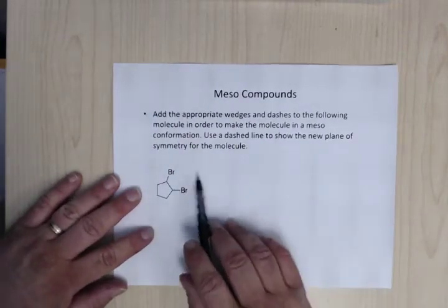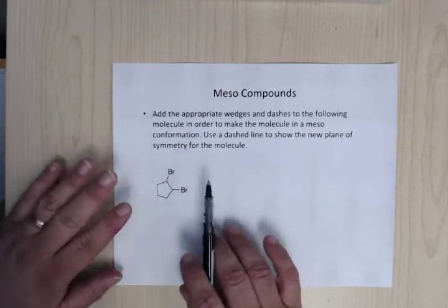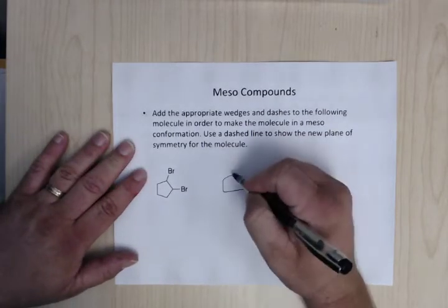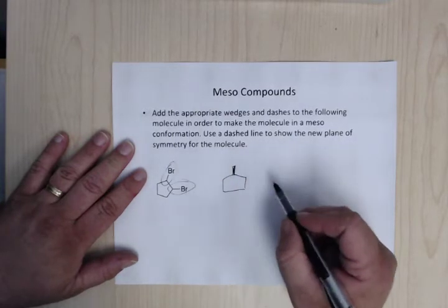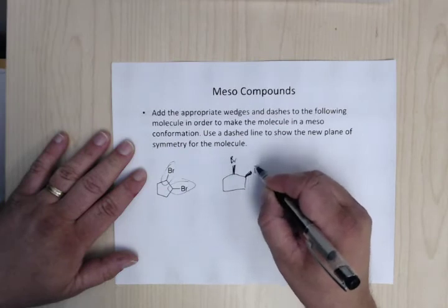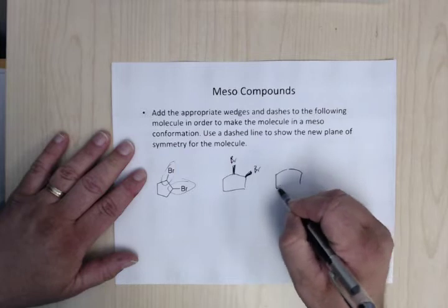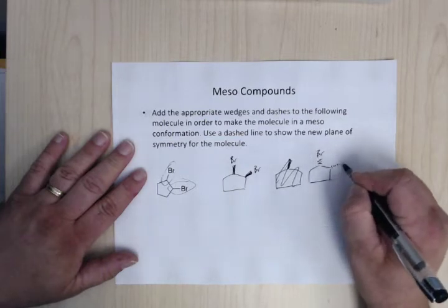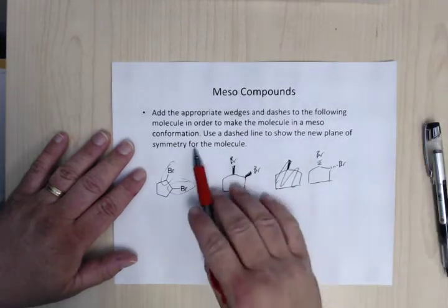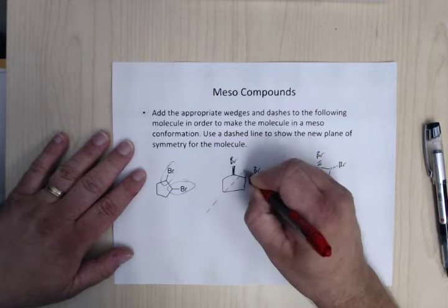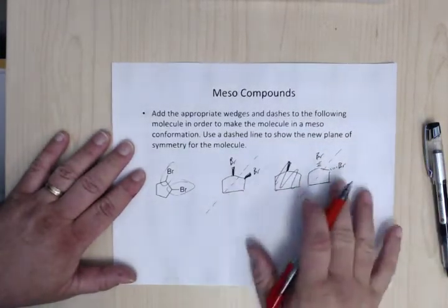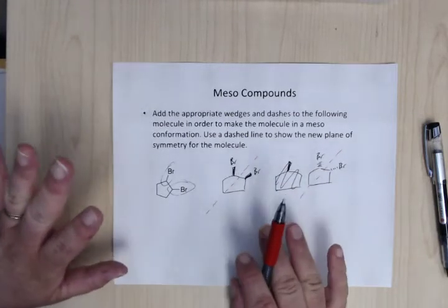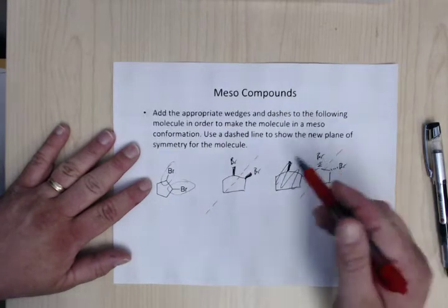So for the meso compounds, what you need to do is, I'm going to give you a molecule like this. You need to add wedges and dashes, where appropriate, to make the molecule meso. So in this case, what you're going to need to do is, the chiral centers are here and here. So you can put, say, the bromine is there, so, like that. Or, you could do it, you could put them both on wedges, or dashes. Both on wedges, both on dashes. And then, what I also want you to do is, show me where the new plane of symmetry is. So, it's going to be, in this case, it's going to be right here, or right here. You only need to draw one of these, I'm just showing you the two that you could do. But you need to figure out where those chiral centers are, and then, put the wedges and dashes on there, so that you can make the molecule meso. And then, show me where that plane of symmetry is.